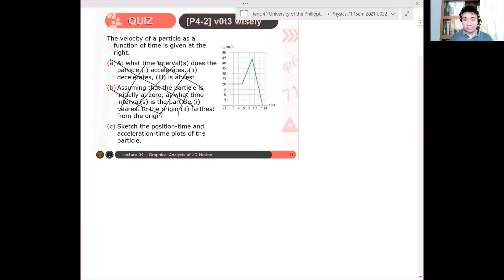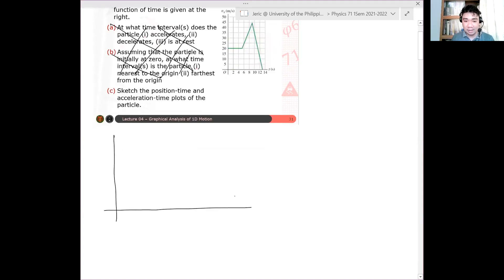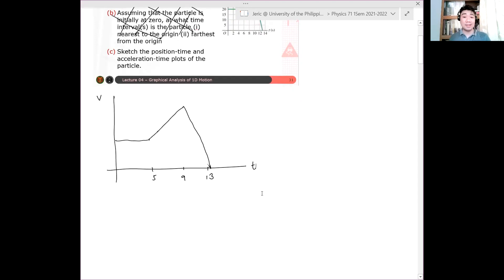Let me re-sketch it in a larger scale. So I have a straight line plot that looks like this - straight line, then increasing, and then decreasing. The important intervals here are t equals 5 seconds, t equals 9 seconds, and t equals 13 seconds. So at t equals 5, 9, and 13, this is now my velocity-time graph.